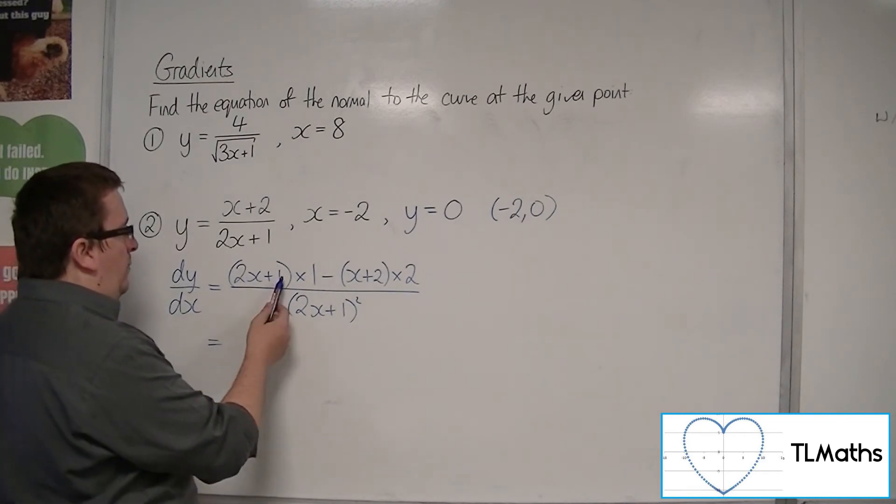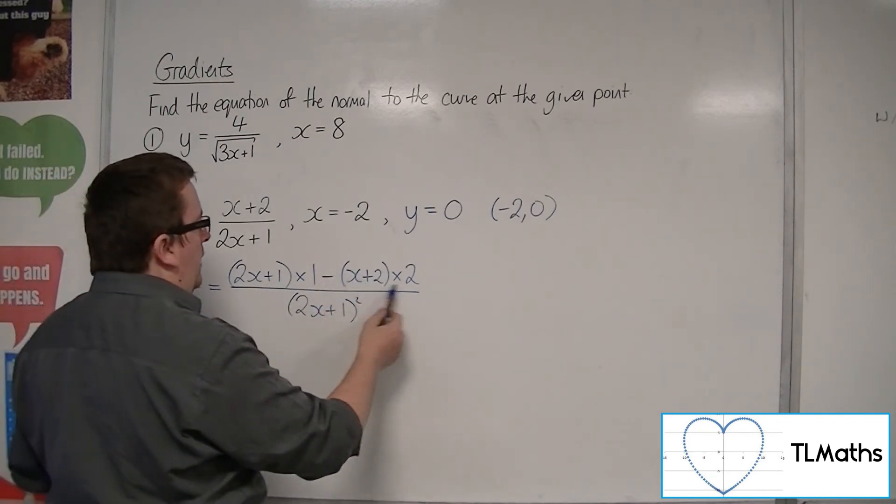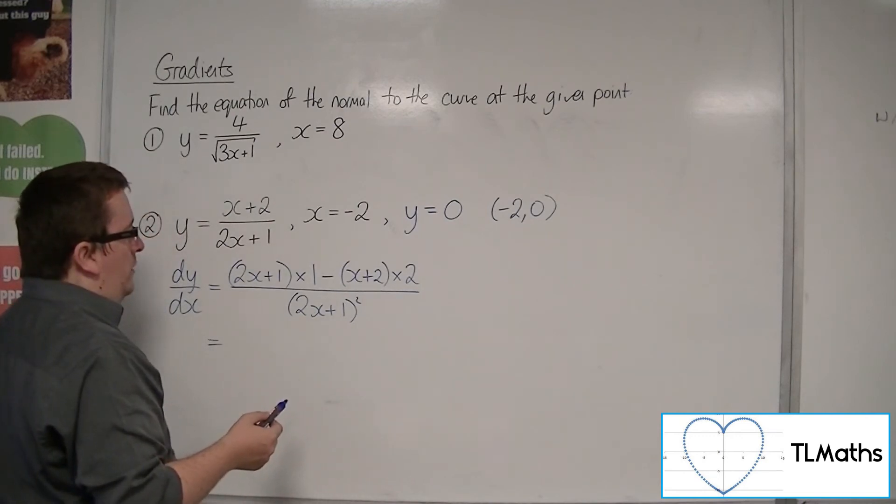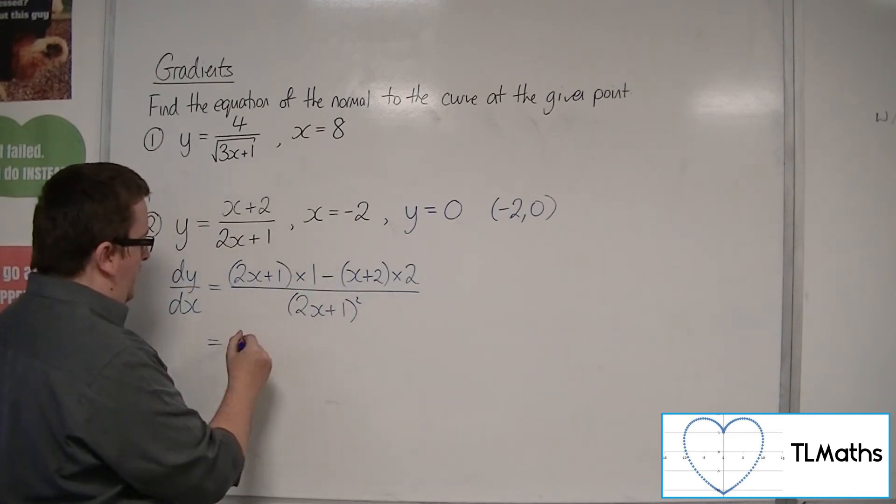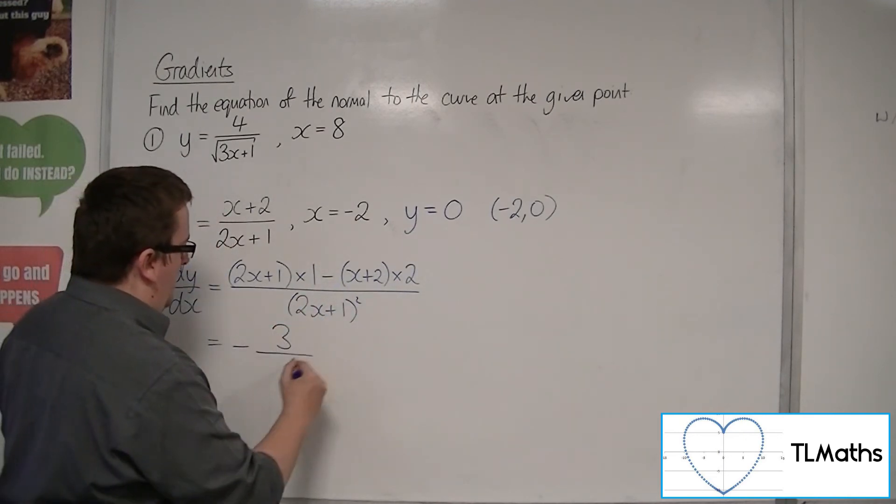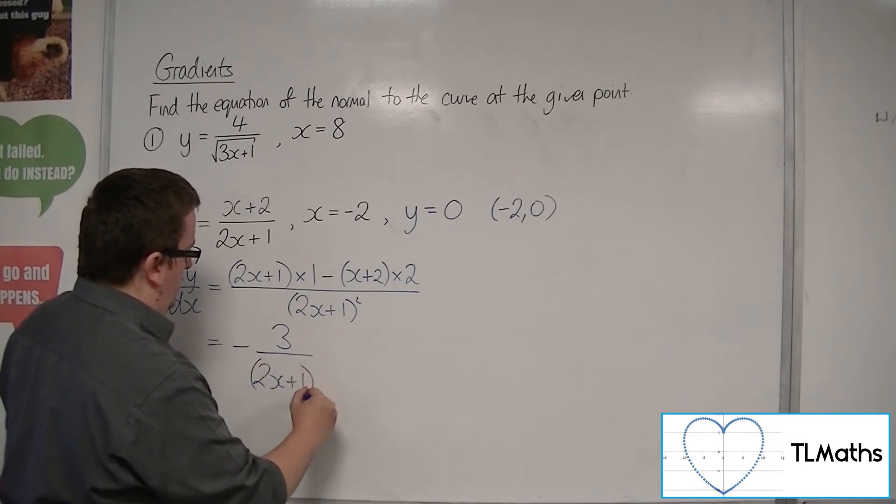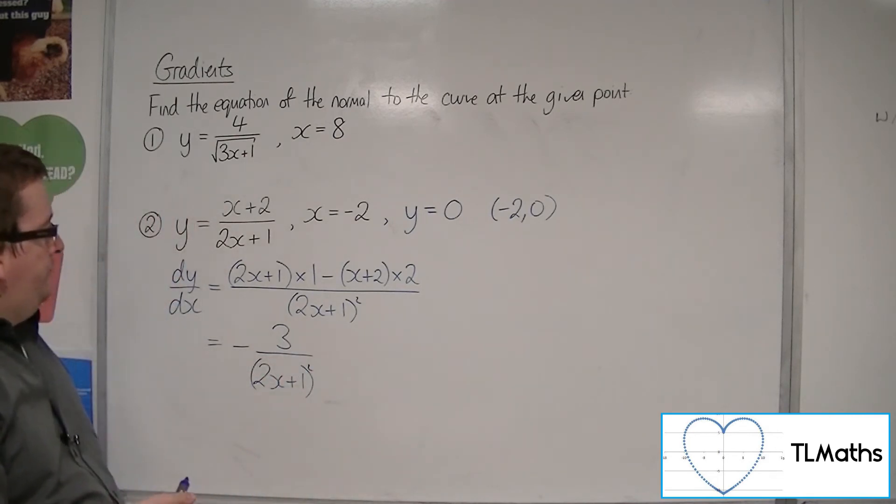So I've got (2x + 1), take away (2x + 4), effectively. So the 2x's are going to cancel. I've got 1 take away 4, so minus 3. So I'm going to have minus 3 over (2x + 1) squared. That's what it's going to simplify to.